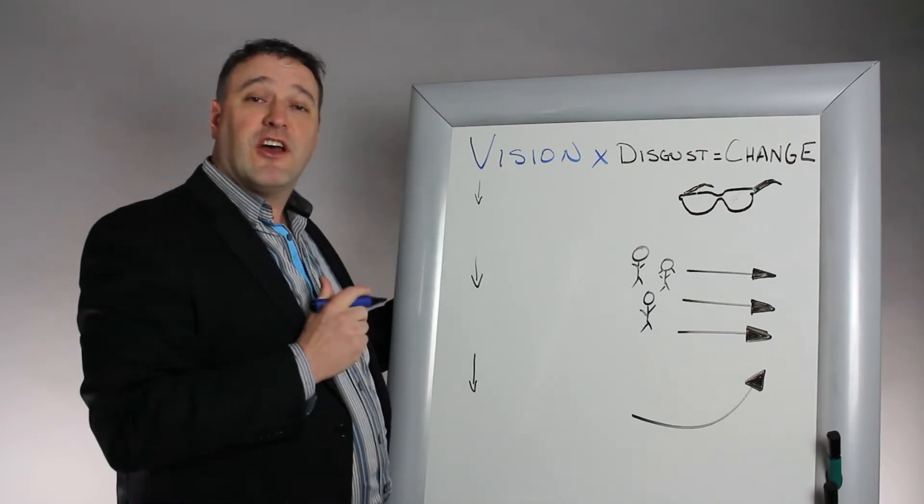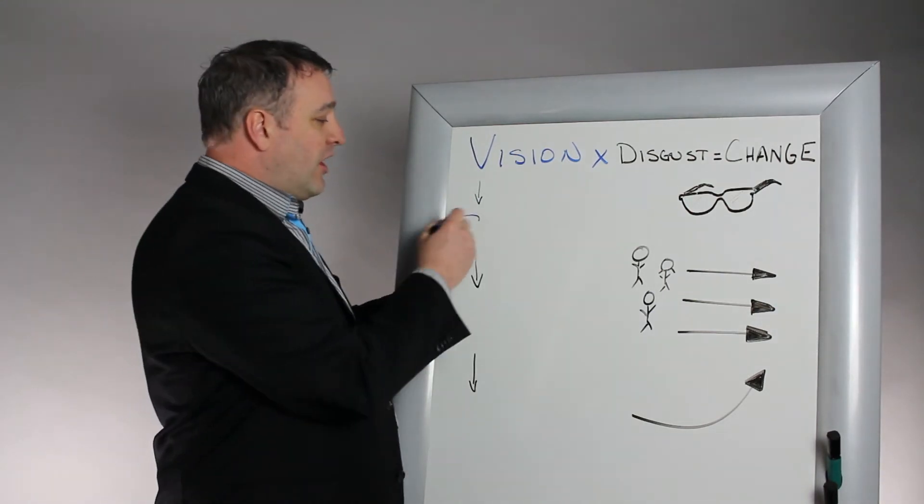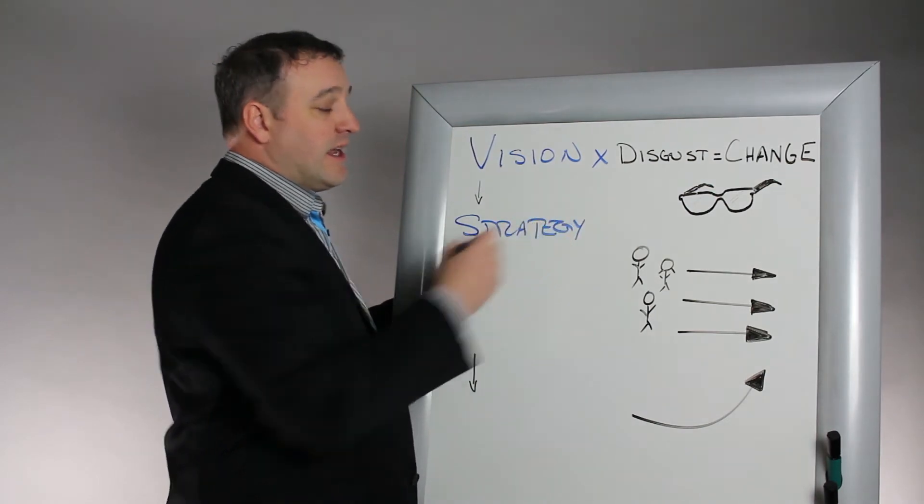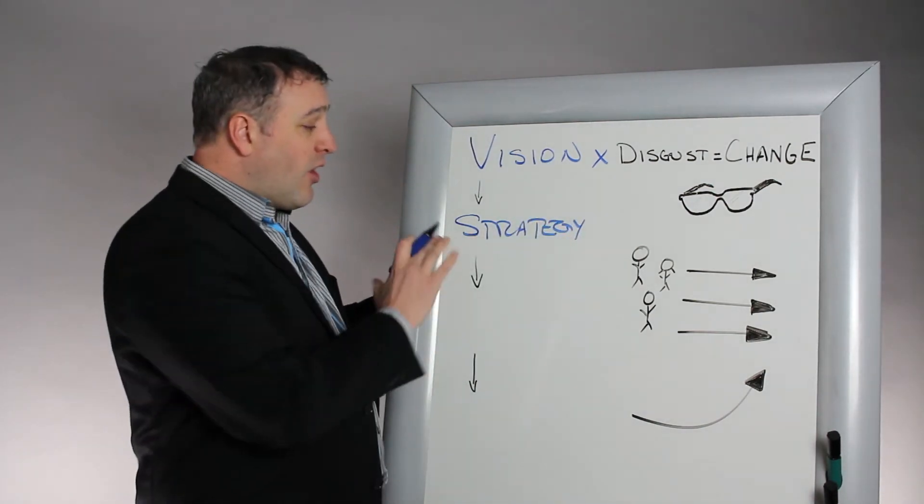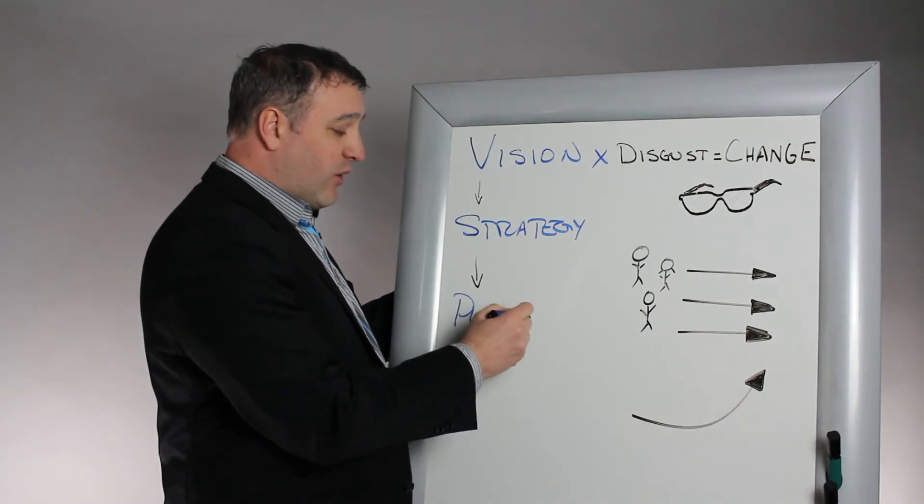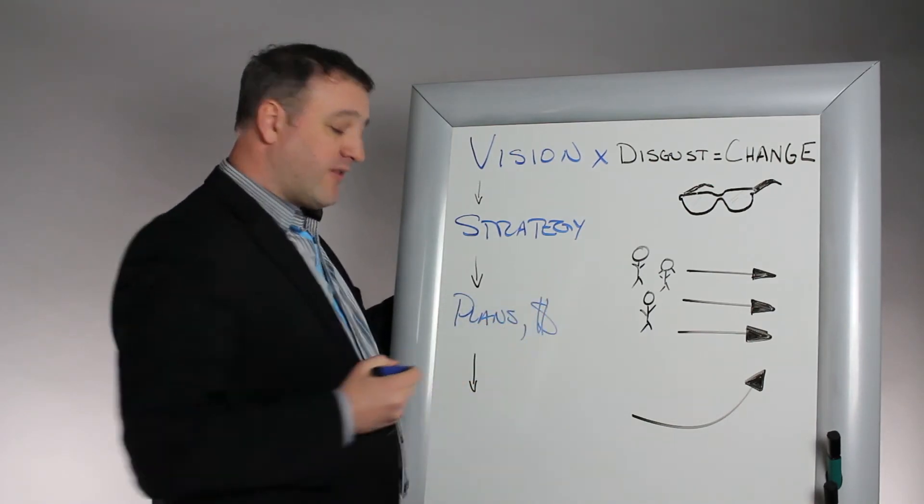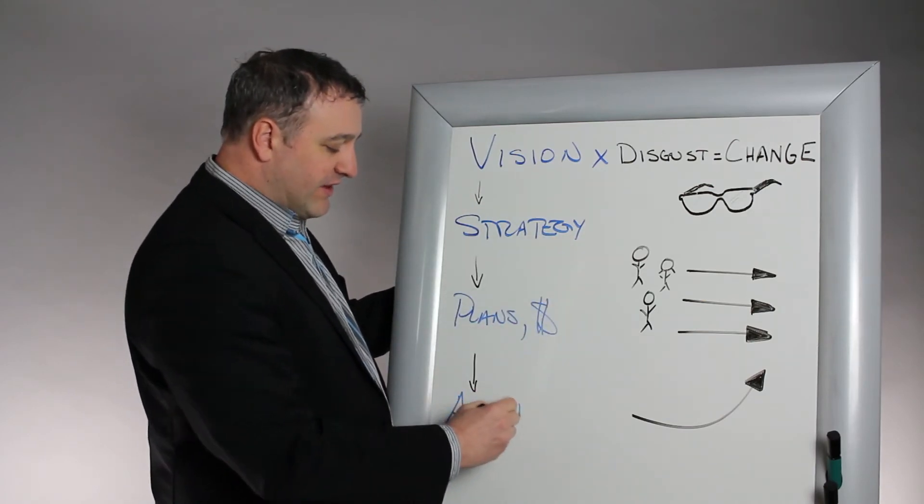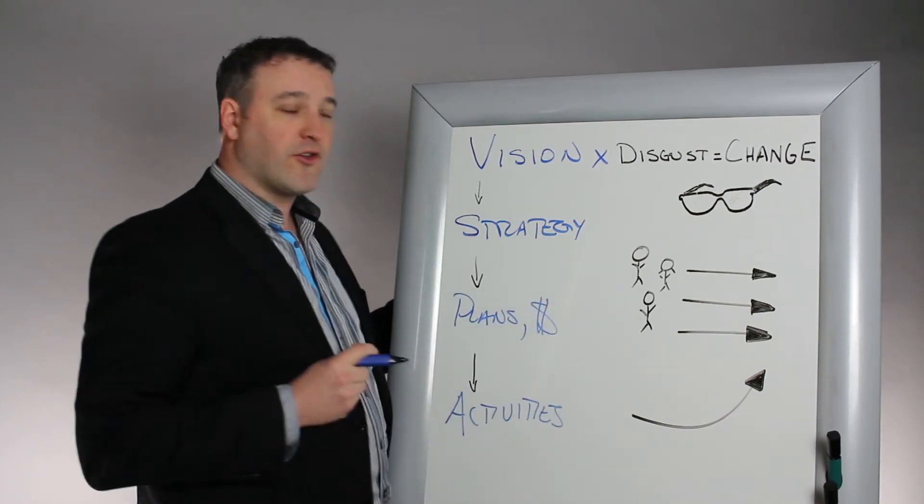Now obviously having a vision isn't enough either. You will also have to consider strategies to put in place, right? So what are the strategic imperatives you're going to put in place? From that, what plans are you going to make? And what kind of budgets are you going to have? And finally out of that comes activities. And those are the day to day that everyone works on.